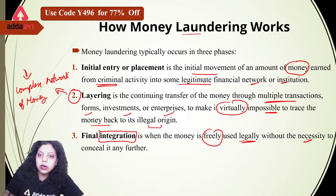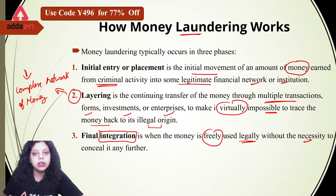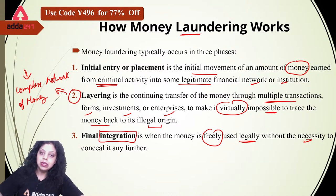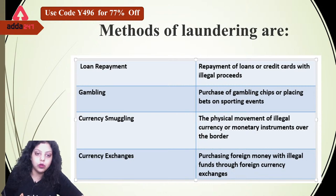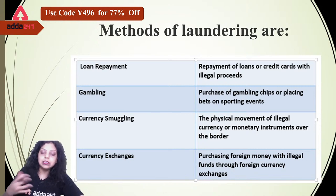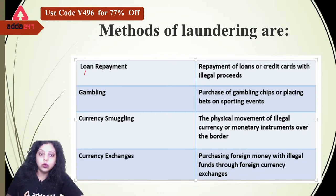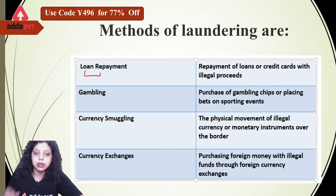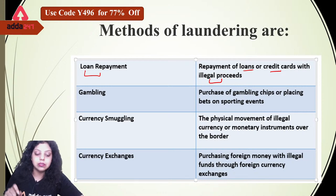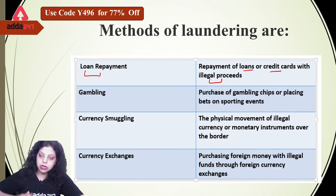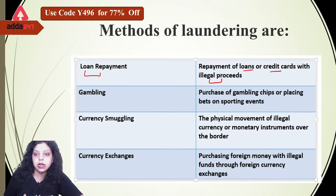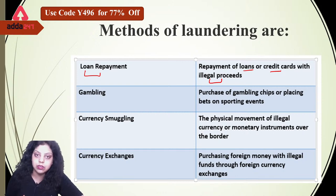This is how we can convert black money into white money — this is how money laundering works. Next are the methods of laundering. How many methods are there which we use in laundering? The first is loan payment: repayment of loans or credit cards with illegal proceeds is a type or kind of method of laundering. When you are repaying your loan or credit card amount with illegal proceeds, that is a method of doing laundering in the country.